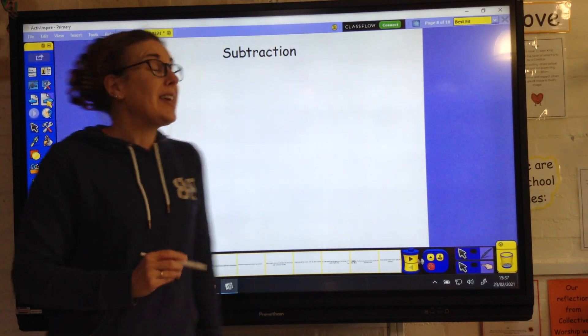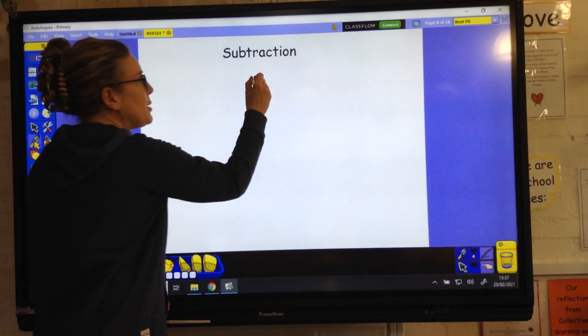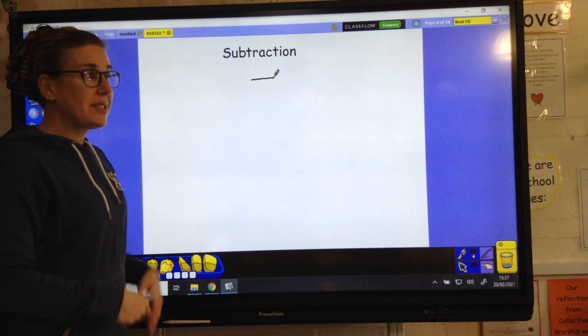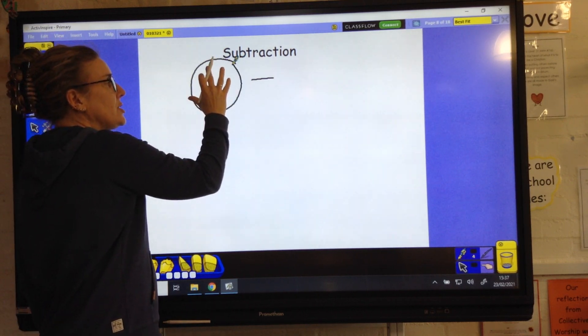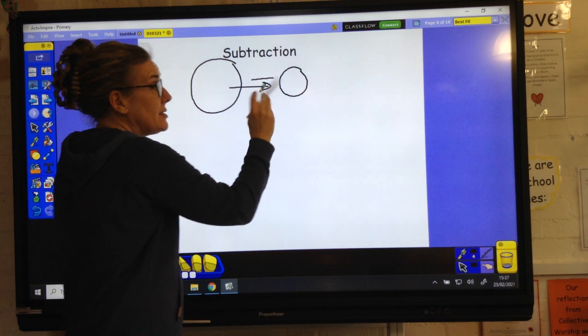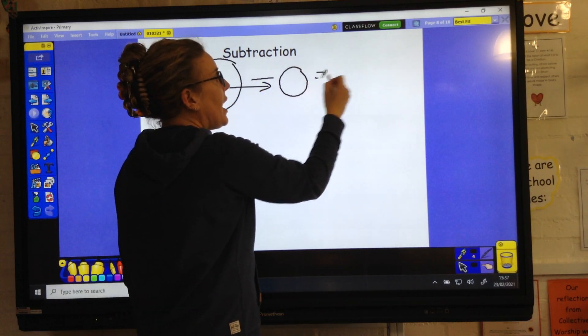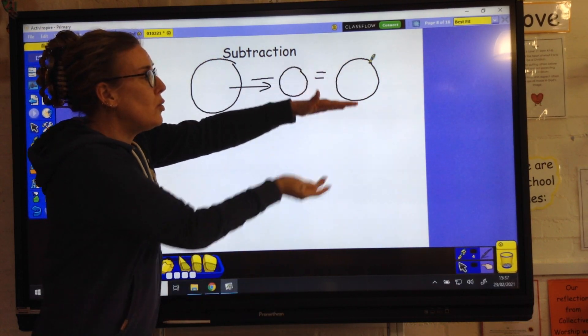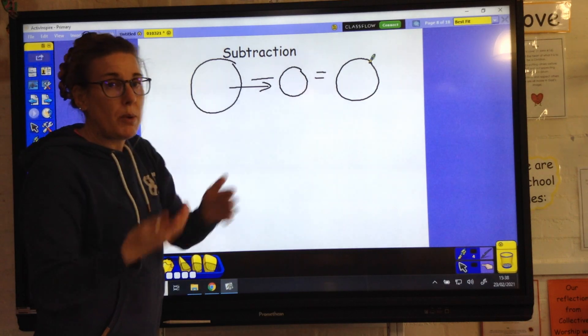This week, we are thinking about subtraction. Subtraction is shown by this symbol here. It means taking away from another set. When we're subtracting in year 2, we always start with a larger set and we're taking away a smaller number. It's part of this set that you take away. Then we end up with our answer at the end, which will always be smaller than the number that we started with.